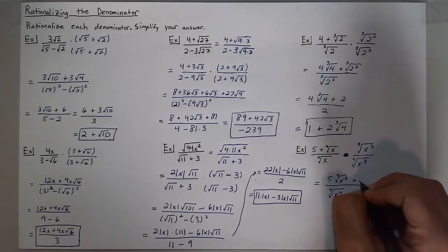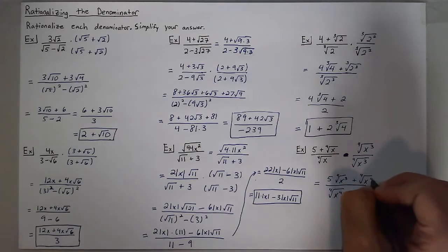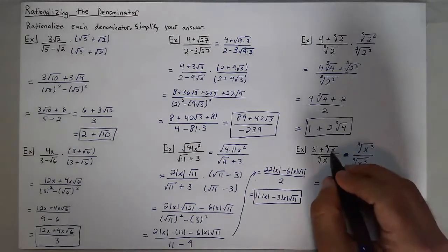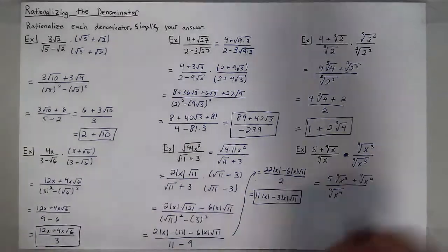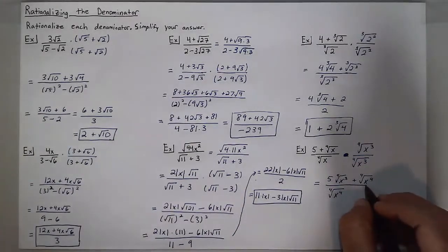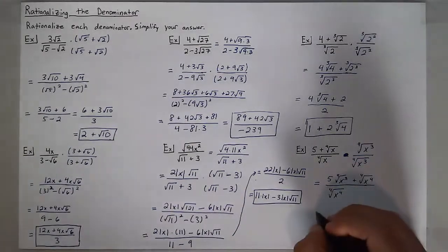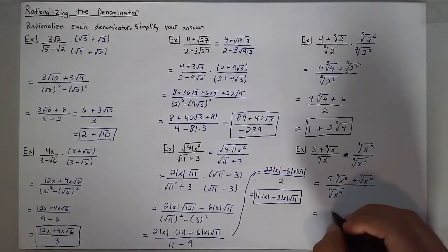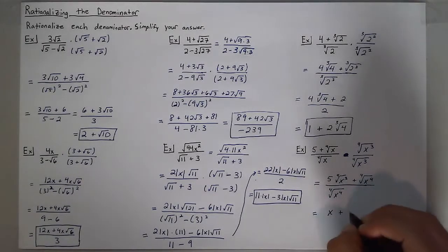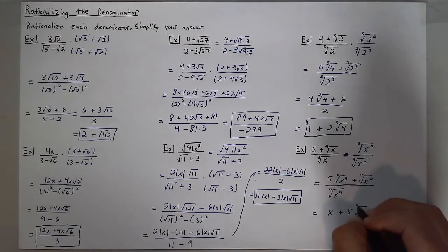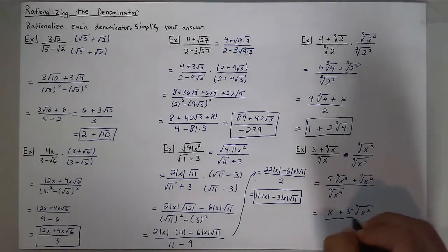Plus the fourth root of x to the fourth, when I multiply x by x cubed. Then I'll write out: I have x plus 5 times the fourth root of x cubed, all over x.